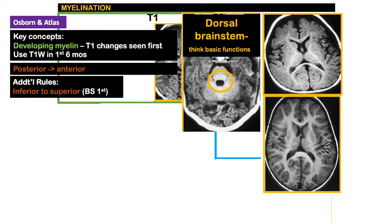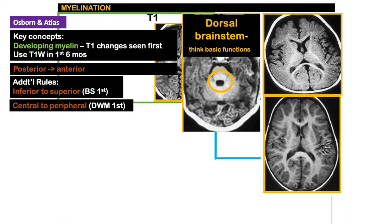Another rule is exemplified here: the deep white matter is myelinated first before the more peripheral subcortical U-fibers, because of the rule of central to peripheral myelination. The deep white matter comes first.